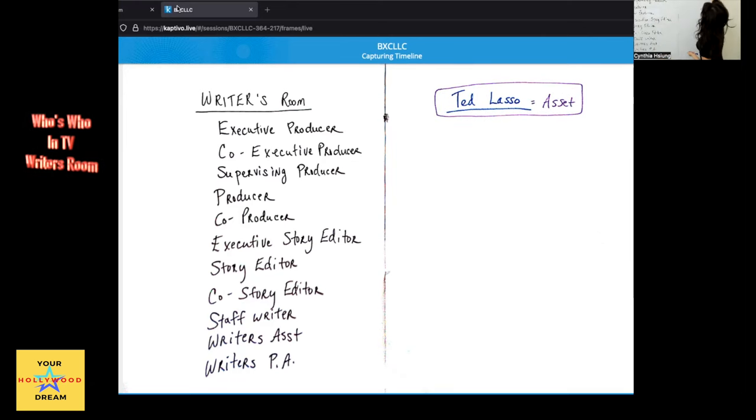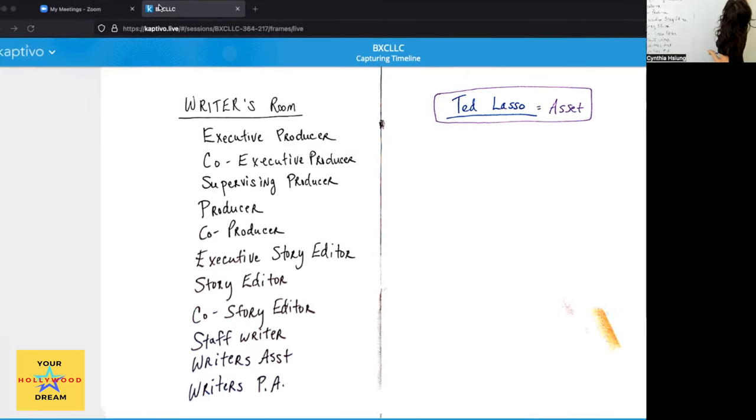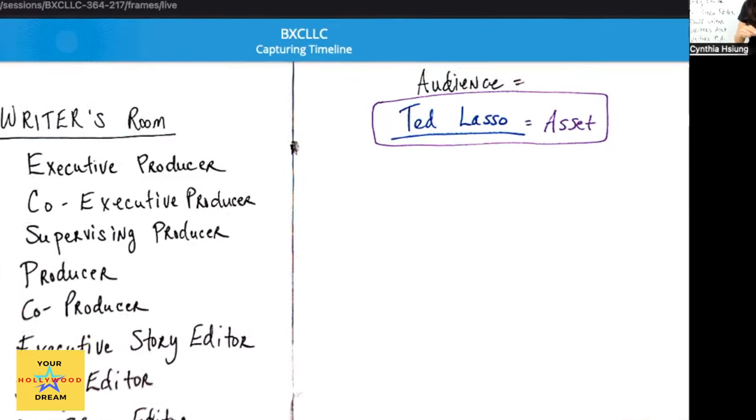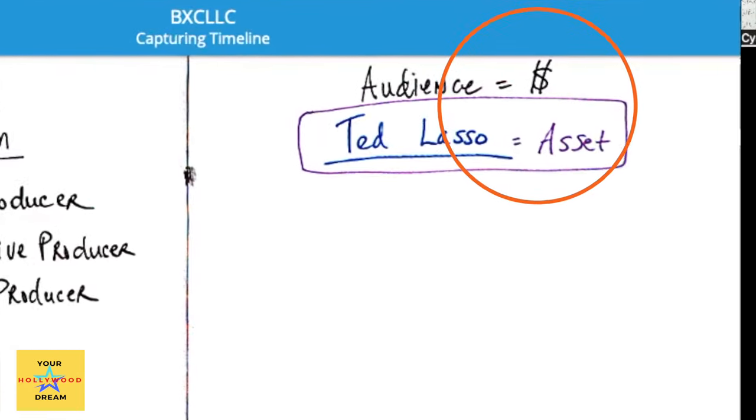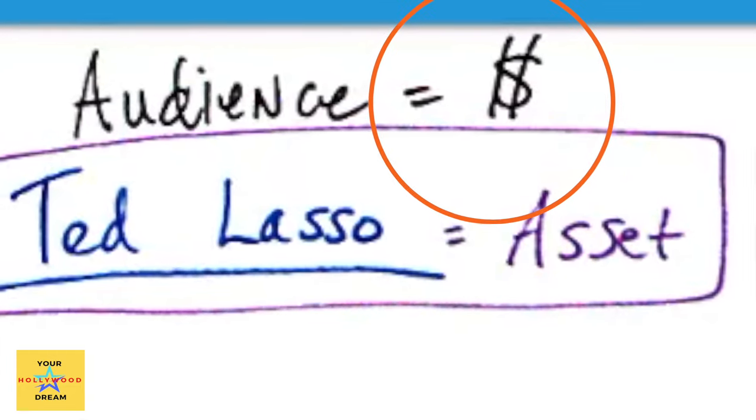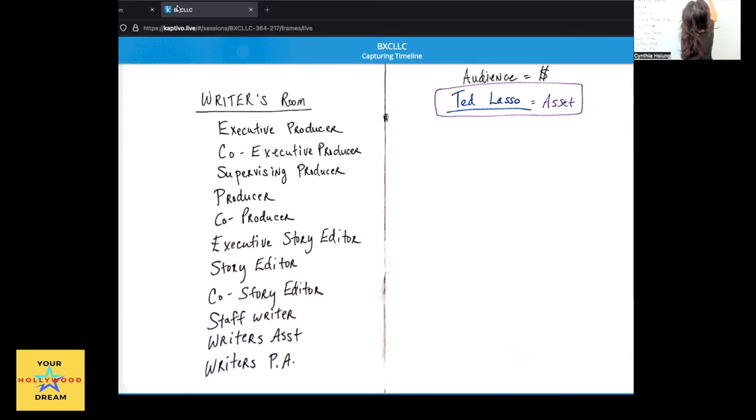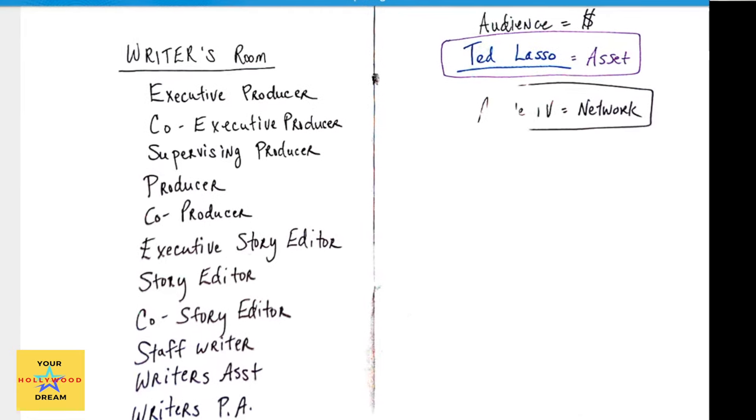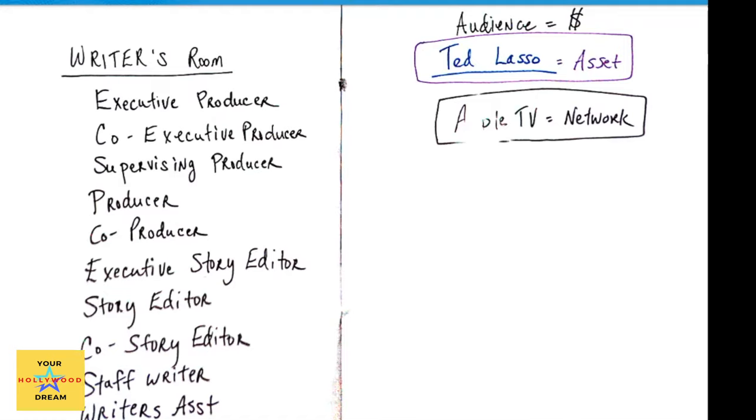And the audience is all important because the audience, which is you and me, is what provides the money part of it. We pay our subscription to Apple TV, that's how Ted Lasso gets made. And bringing up Apple, that would be our network. Now the network is the entity that distributes the asset.